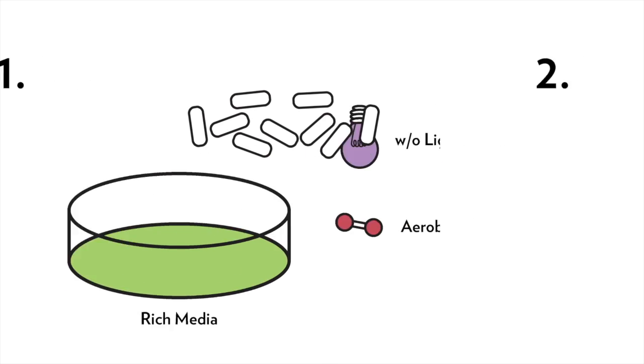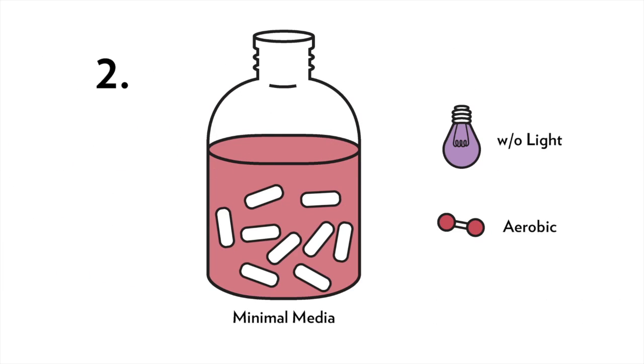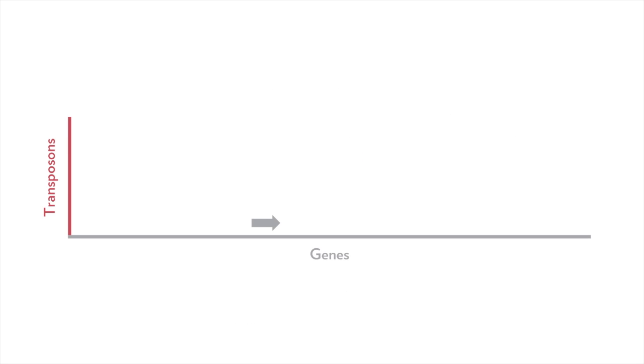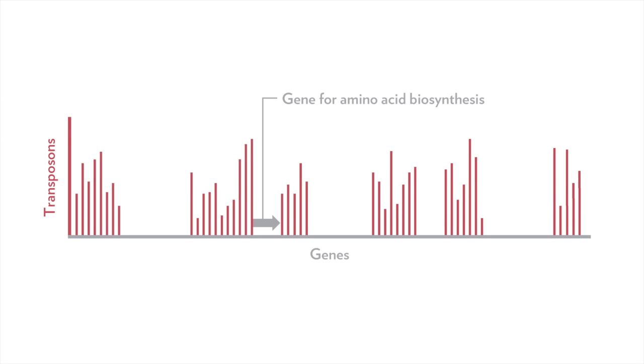We can take that library and grow it aerobically in a minimal media, which allows us to make predictions about which genes are required. For example, there's no amino acids added to the minimal media, so we know genes responsible for amino acid biosynthesis should be essential, and indeed they are.